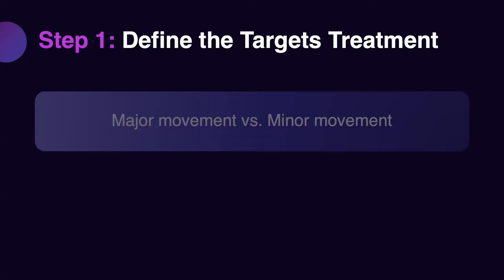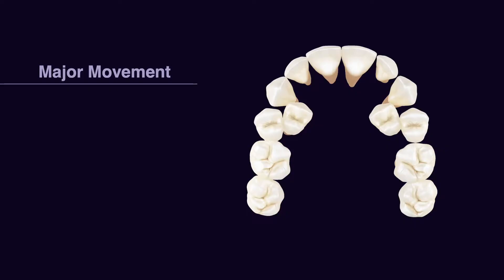Today I'd like to define two more important terms: major movement and minor movement. If your target needs to move significantly in space — whether it's a dental arch, segment, or individual tooth — that is considered a major movement. In this book, we define anything more than two millimeters or anything more than 30 degrees as a major movement.